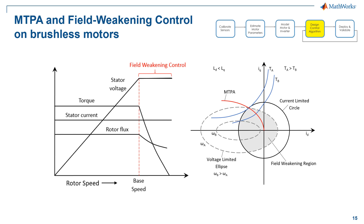Another aspect of MTPA is to increase the efficiency of the machine and minimize stator current losses, as shown on the right side of the figure. The blue concave curve shows the constant torque line, indicating that all IQ and ID pairs on those lines produce the same amount of torque. Only the intersection of constant torque lines with the MTPA line gives the operating points that achieve MTPA.